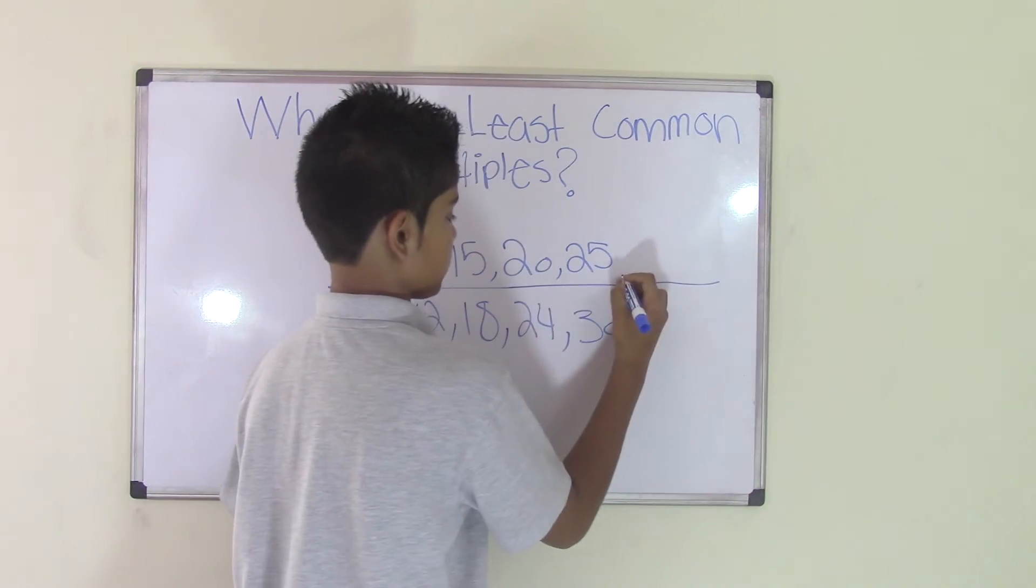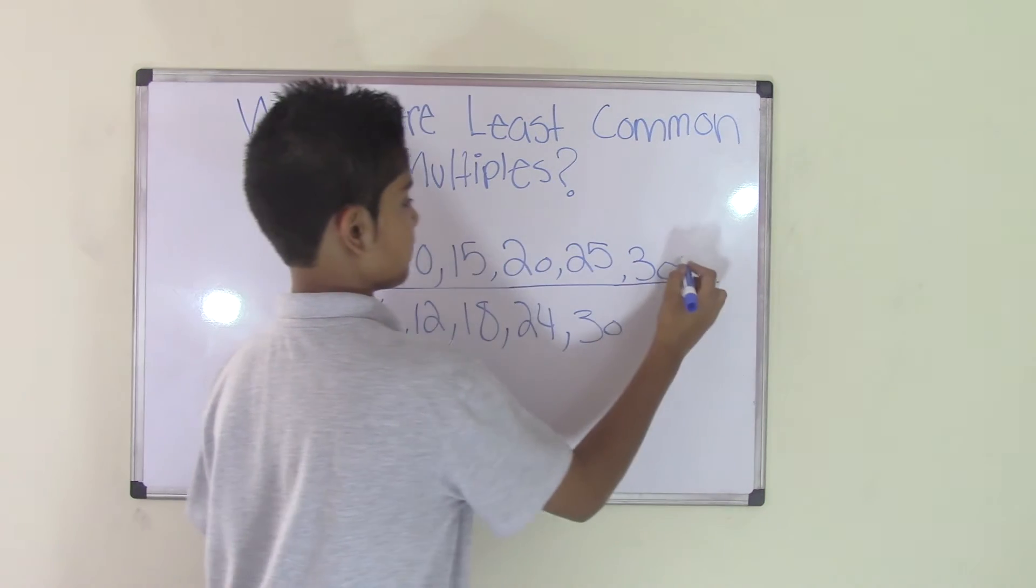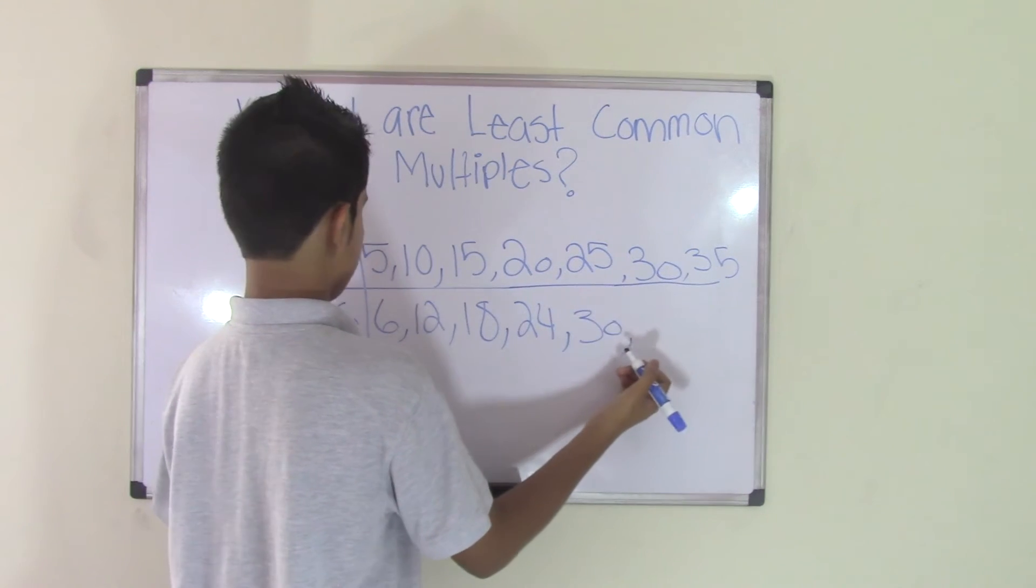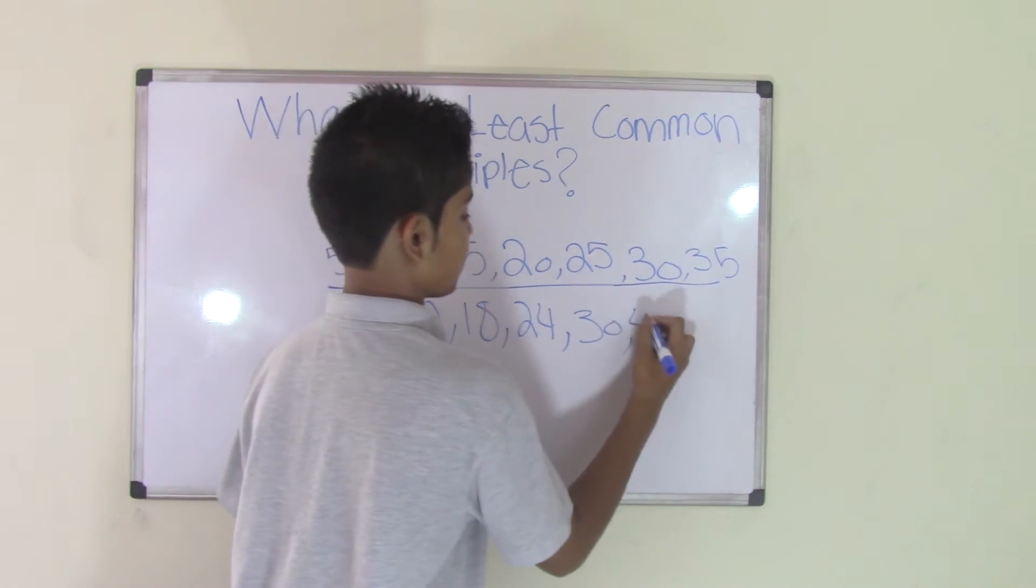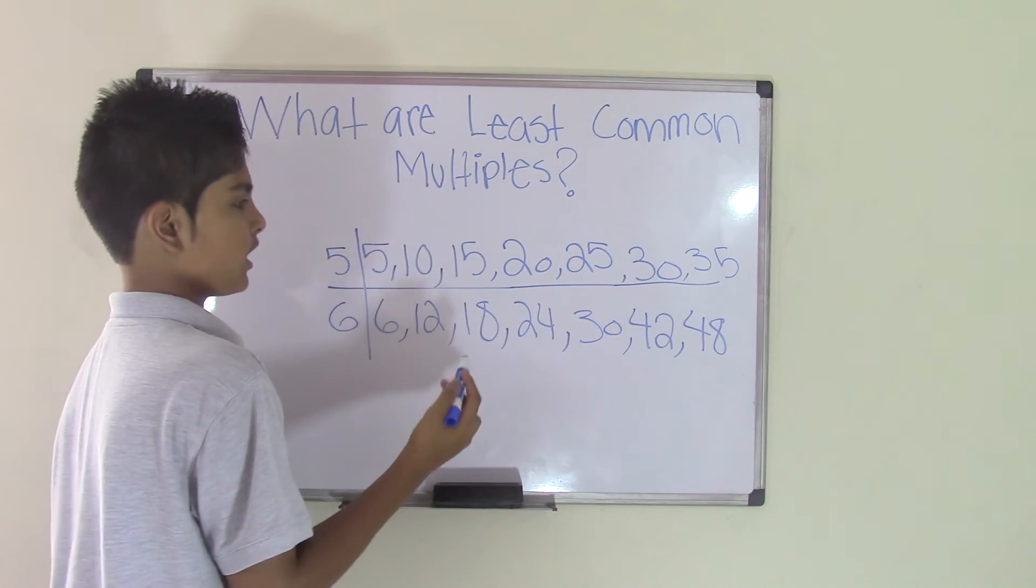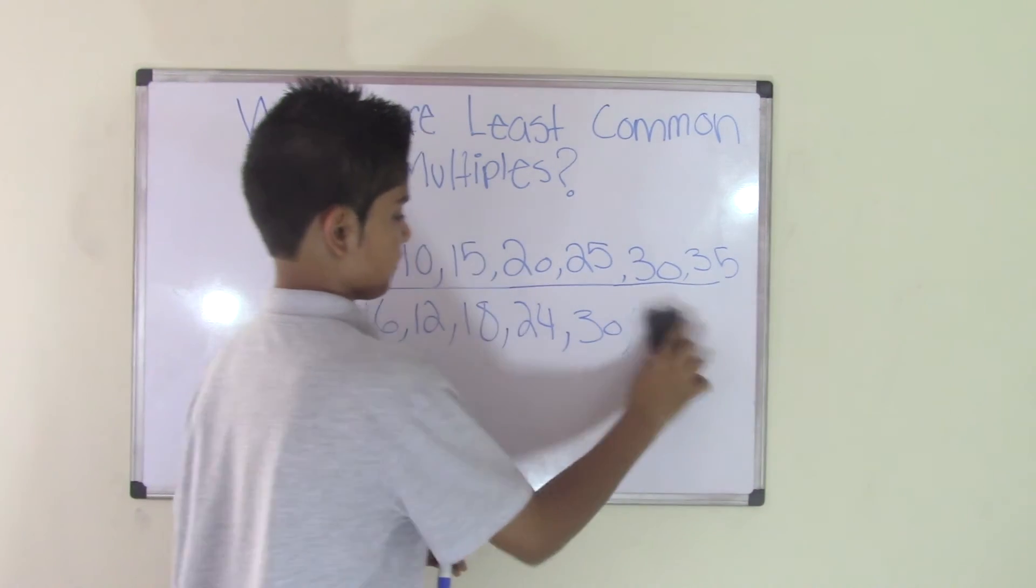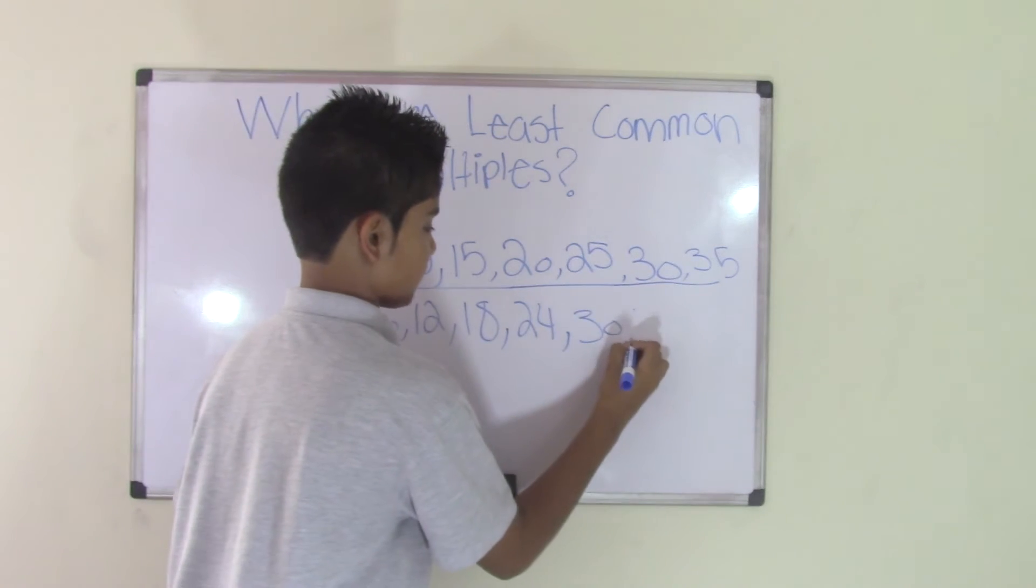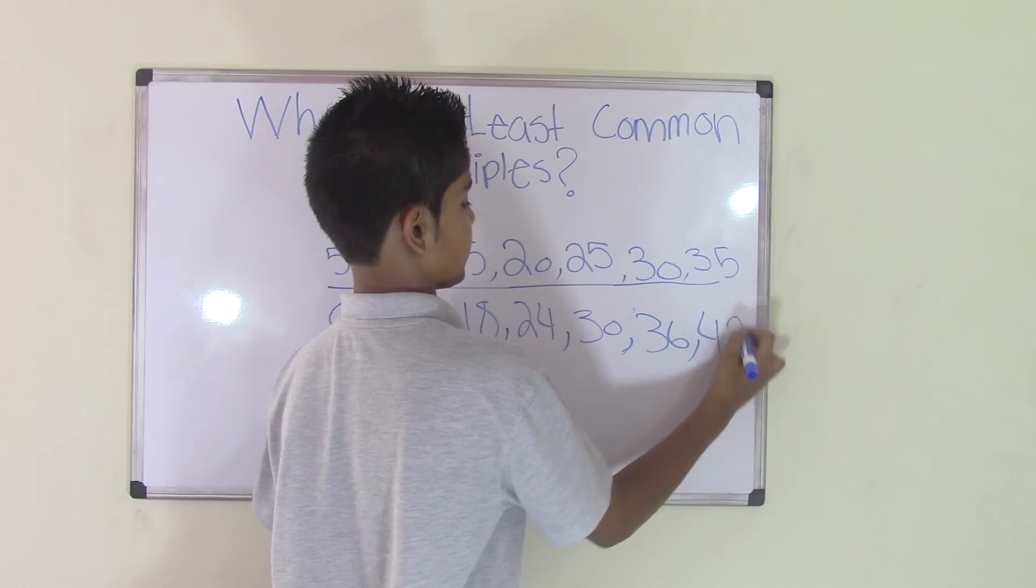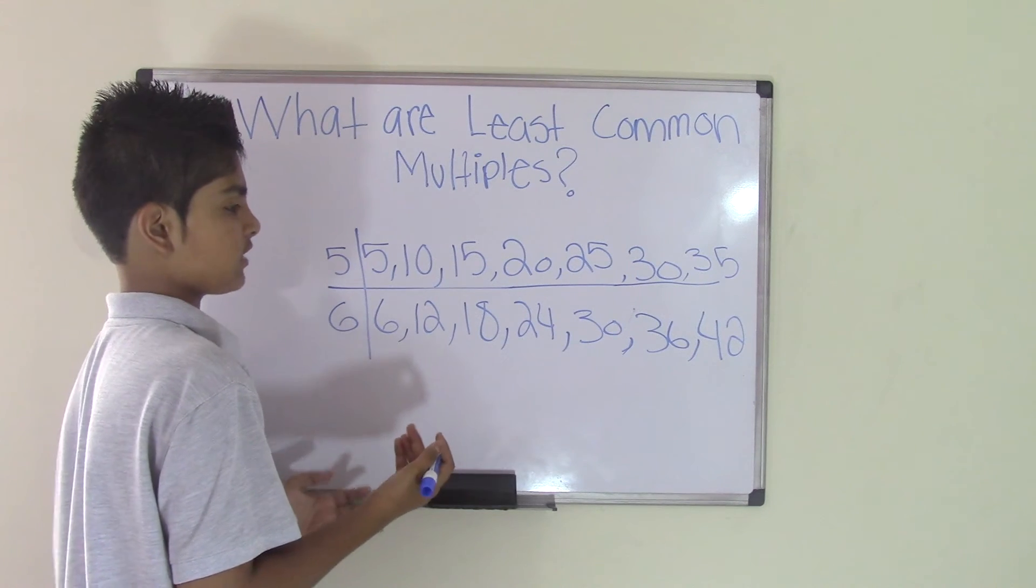5 times 6 is 30, 5 times 7 is 35. 6 times 7 is 42, 6 times 8 is 48. Actually, I'm sorry, I did it wrong. I remember that it was 5 to 5, so 6 times 6 is 36, and 6 times 7 is 42. Now, let's see if you can find a least common multiple.